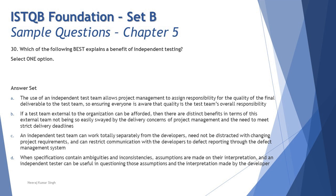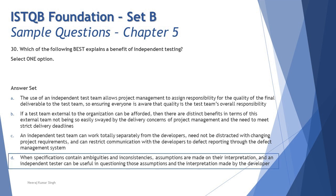Option D is the correct answer: when specifications contain ambiguities and inconsistencies, assumptions are made on their interpretation, and an independent tester can be useful in questioning those assumptions and the interpretation made by the developers. This makes total sense — we need independent testers to challenge or disapprove assumptions made by a BA or developer when a requirement had ambiguity. My assumptions always seem right to me; I need someone else to validate them. This is straightforward from the syllabus.